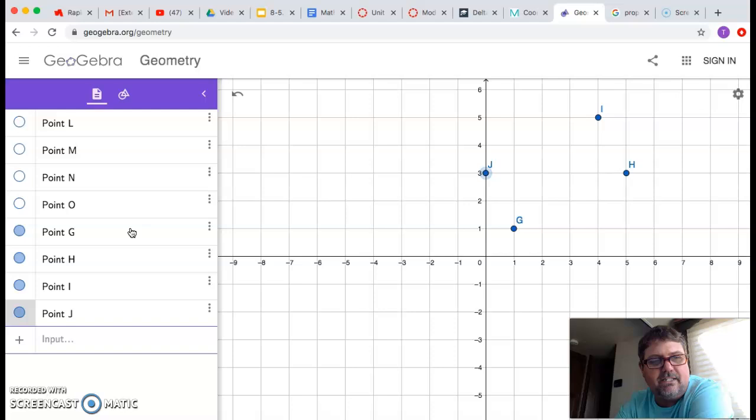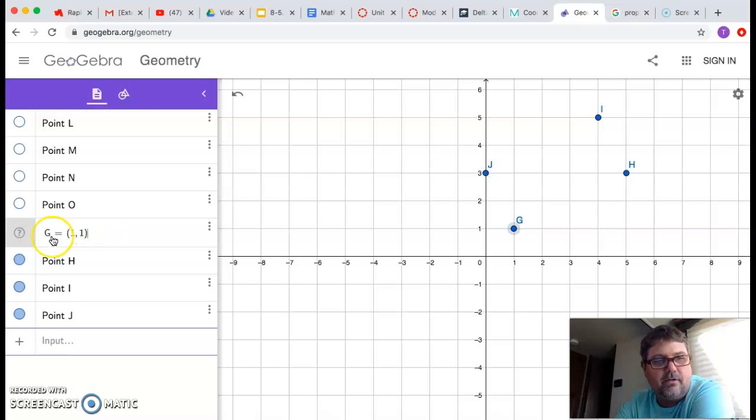So if you want to see the syntax and how you enter points in GeoGebra, you go to this little sheet here and you define them this way, like G equals (1,1). And this is H equals (5,3) and so on and so forth. So that's how you enter these things into GeoGebra.